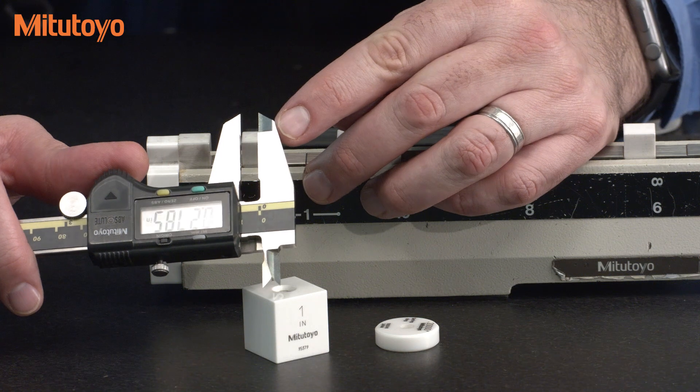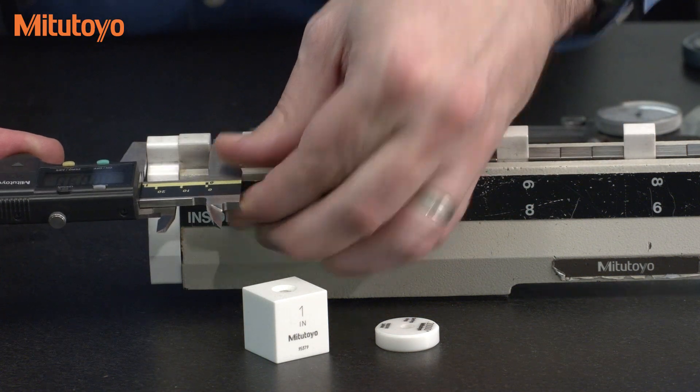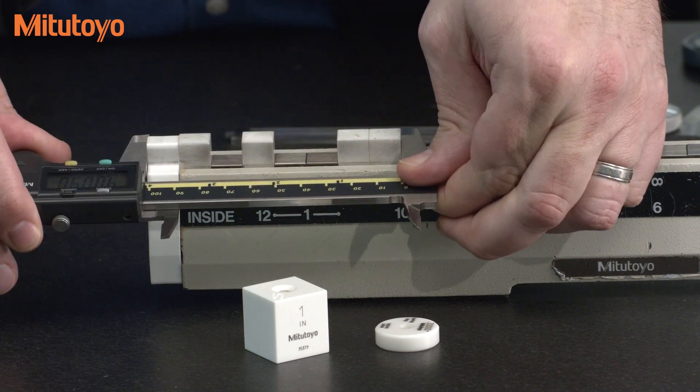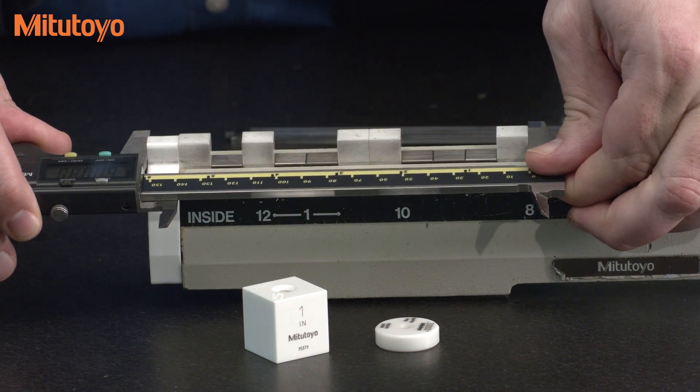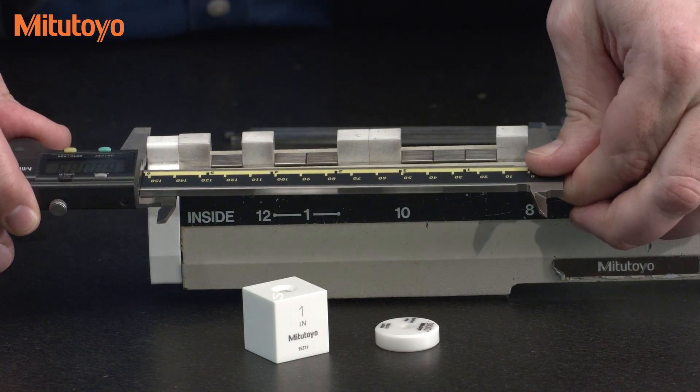For the outside jaws, we take a series of measurements over the measuring range. One inch, two inch, four inch, six inches, and we also vary where we are across the jaws.